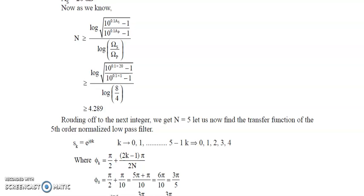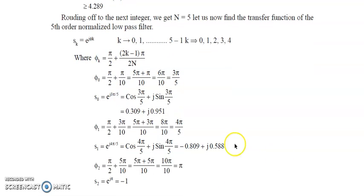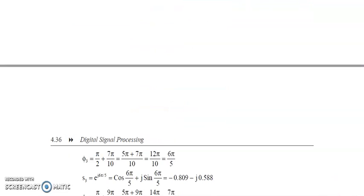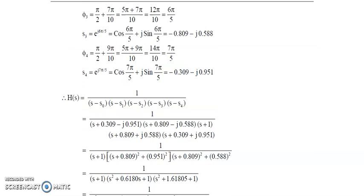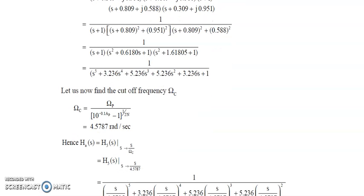Now write sk = e^(j·φk), where k varies from 0 to 5, and find the poles using the appropriate formula. So you find φ₀ and s₀ = e^(j·φ₀), φ₁ and s₁ = e^(j·φ₁), φ₂ and s₂ = e^(j·φ₂), and similarly all poles up to s₄. Then H(s) = 1 / [(s − s₀)(s − s₁)(s − s₂)···(s − s₄)]. After finding all poles, find Ωc, and then Ha(s) = H₅(s) with s replaced by s/Ωc.